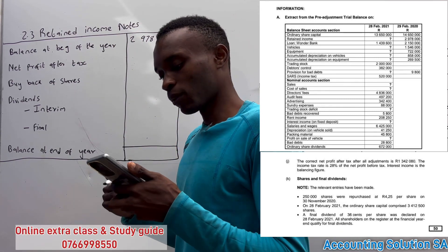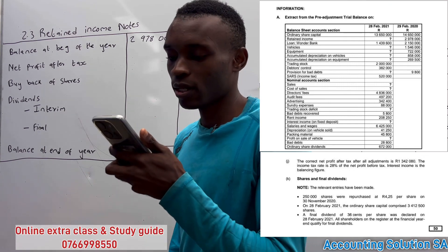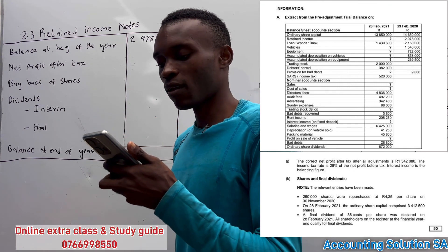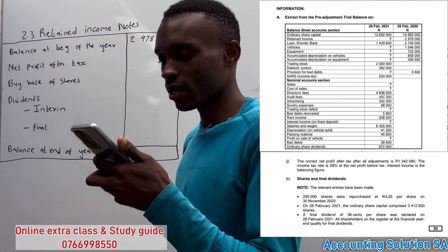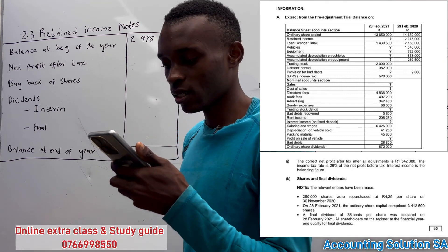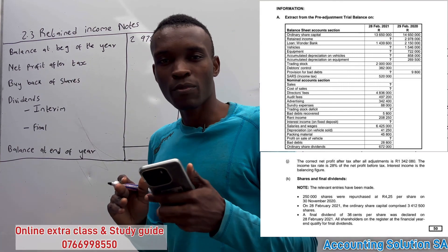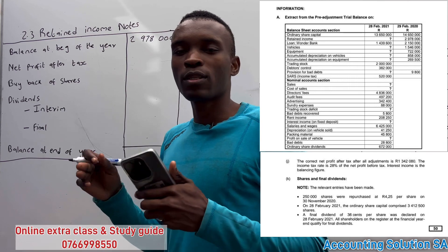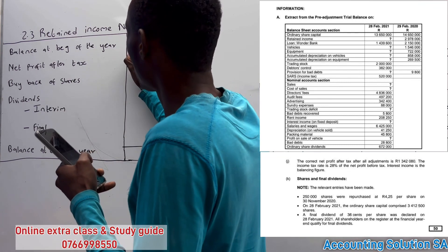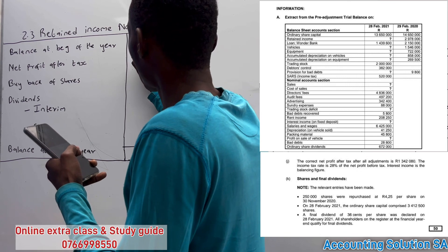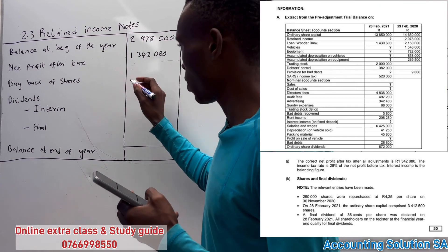Now let's look at net profit after tax. The first transaction states that the correct net profit after tax after all adjustments is 1 million 342 thousand and 80 rand. The income tax rate is 28% of net profit before tax, and interest income is the balancing figure. In this case it is given directly, but in other cases you may need to subtract tax first to get the after-tax figure.